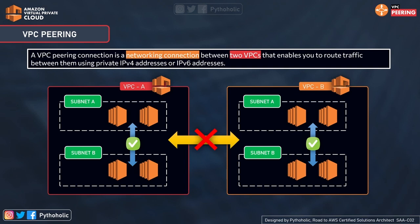There is no communication between them — they are totally isolated. They want to talk to each other but they are not able to. Without VPC peering, we would either need public internet access, VPN connections, or internet gateways to achieve this.